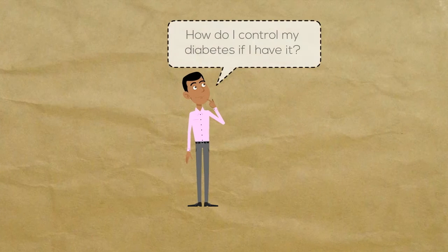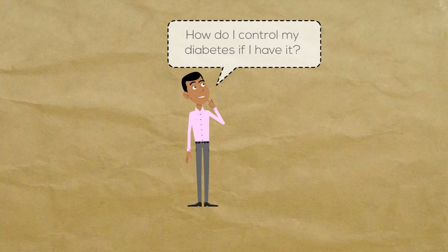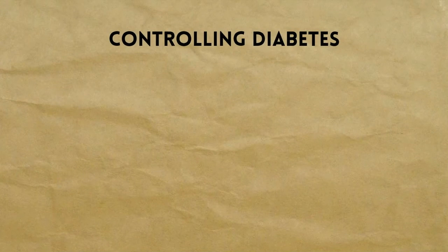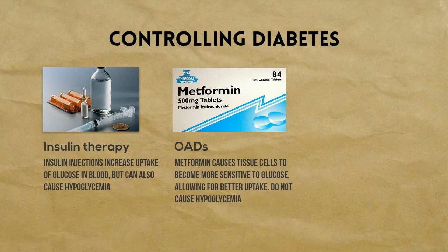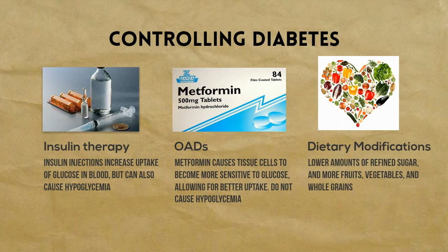Lastly, what kind of treatments are available to those who suffer from type 2 diabetes? There are three common treatments that are used today: insulin treatment, oral hypoglycemic drugs, and dietary modifications. Insulin is used later in the course of diabetes so that you could increase insulin levels in your body and ultimately reduce blood glucose.